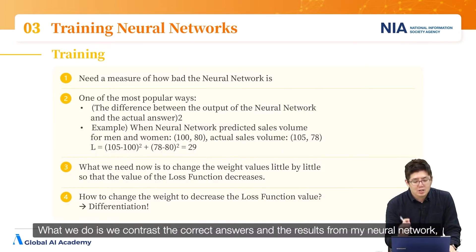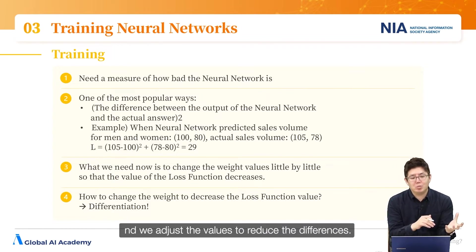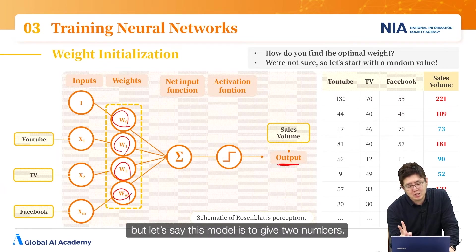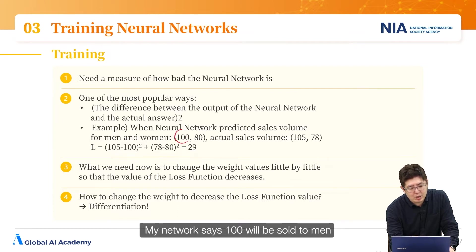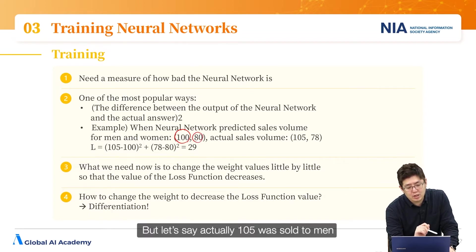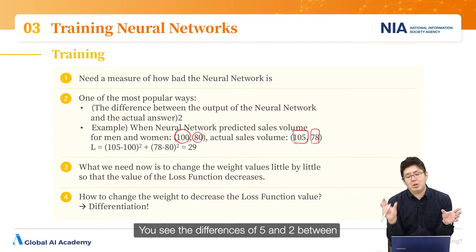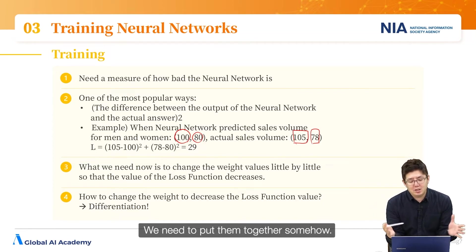What we do is contrast the correct answers against the results from the neural network and adjust the values to reduce the differences. For example, suppose the model gives two outputs — one for men and one for women. The network says 100 will be sold to men and 80 to women, but actually 105 was sold to men and 78 to women. We see differences of 5 and 2. We need to combine these differences somehow.